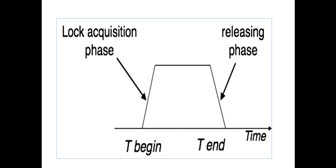Looking at the diagram: T-begin — since all the locks are not acquired at the same time, it gradually acquires all of them, so the lock acquisition curve is not straight — it is somewhat bent. When all the locks are acquired, execution starts. Then in the releasing phase, locks are also released gradually one by one, so that curve is also not straight. The three phases are: lock acquisition phase, execution phase, and releasing phase.